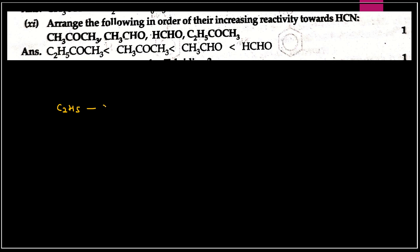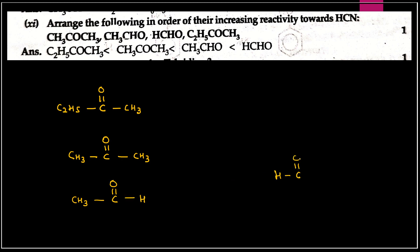Question eleven: arrange in increasing order of reactivity towards HCN. Teen compounds hain: C2H5-CHO, CH3-CO-CH3, and CH3-CHO. HCN ke liye nucleophilic addition hoti hai — carbon ka positive character zyada hoga wahan reactivity zyada hogi. Steric hindrance aur inductive effects consider karo: less substituted carbonyl compounds react more readily with HCN.